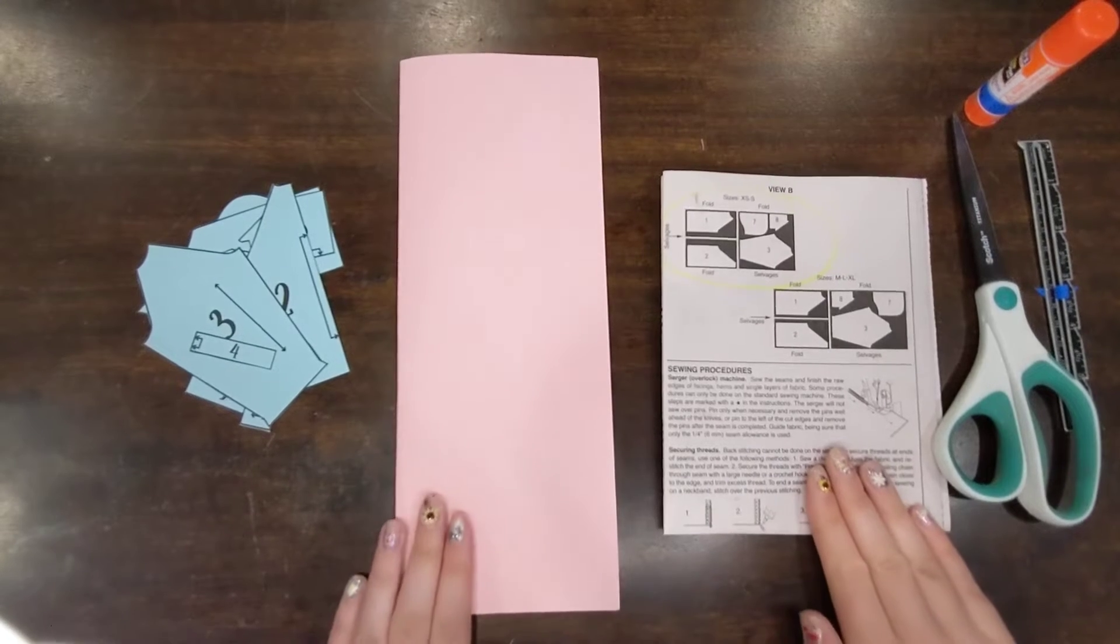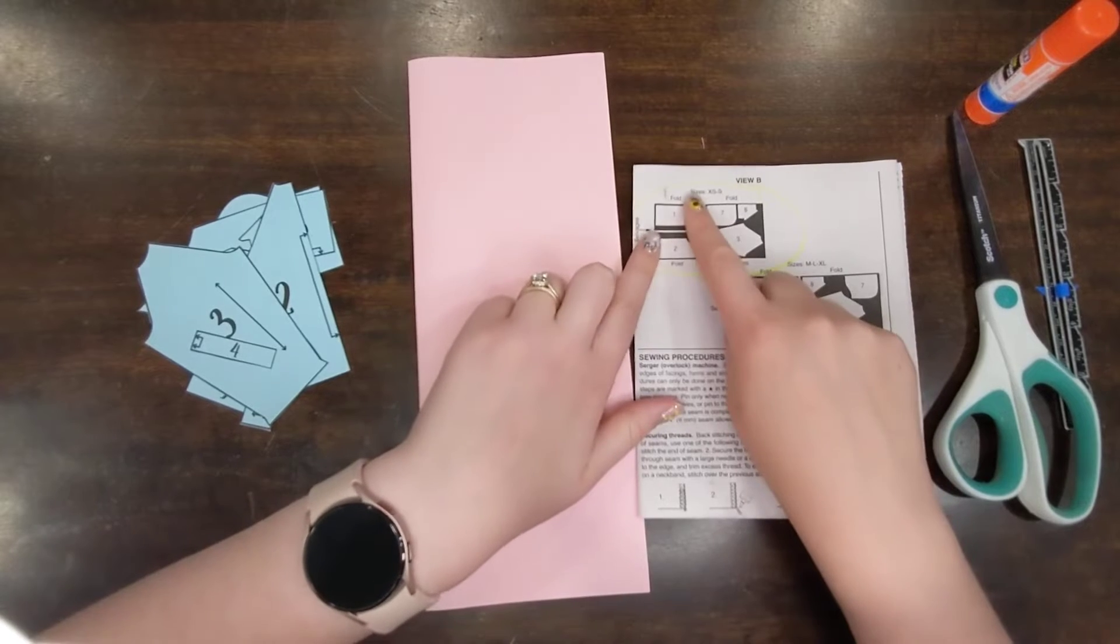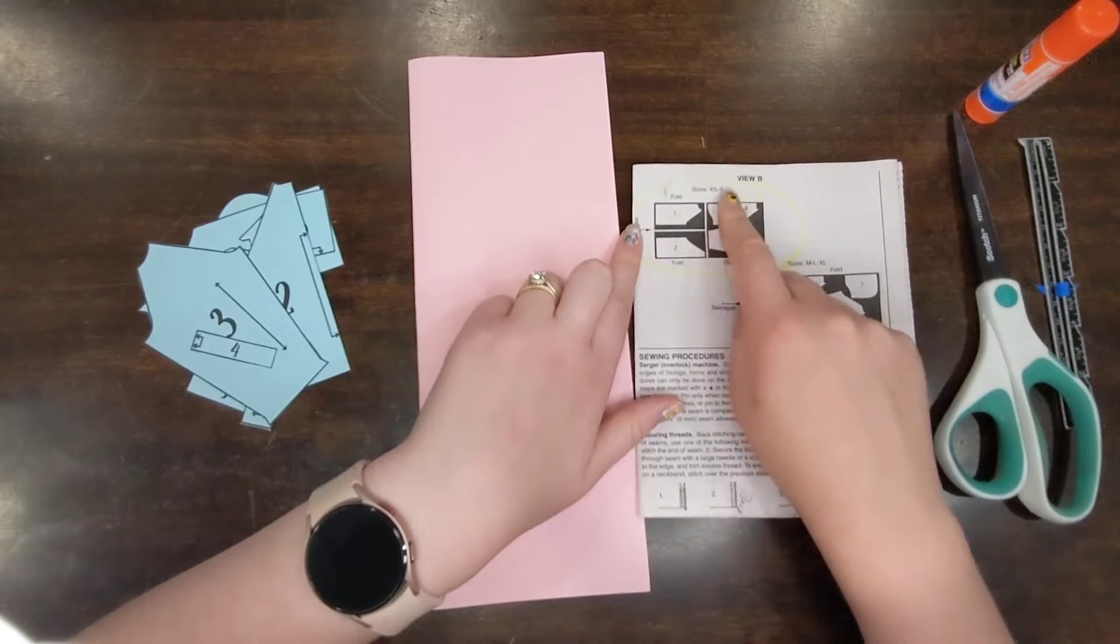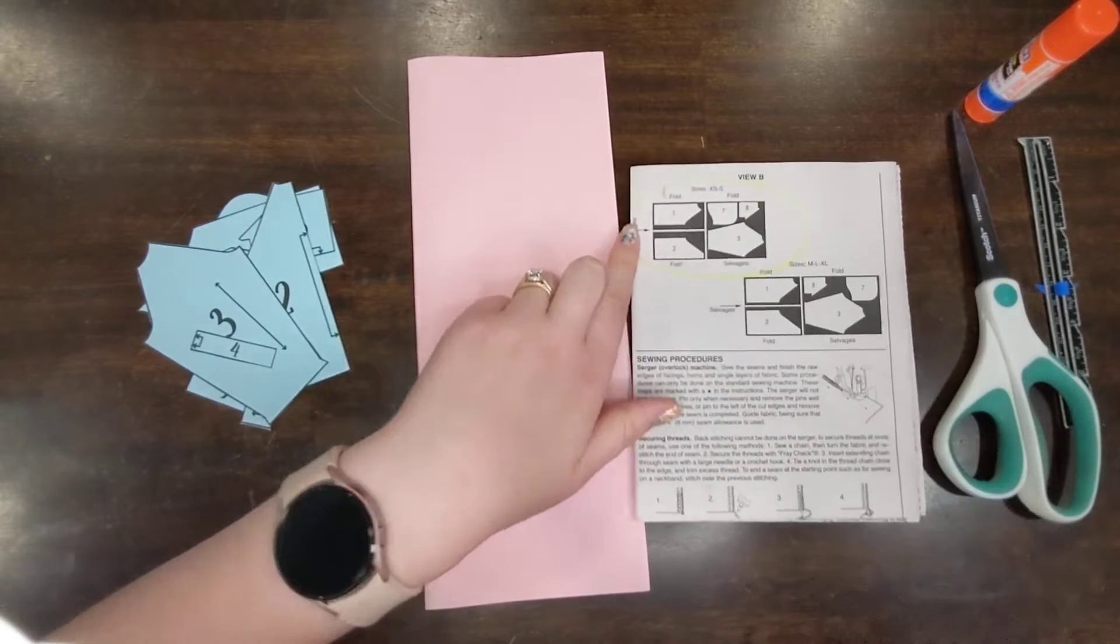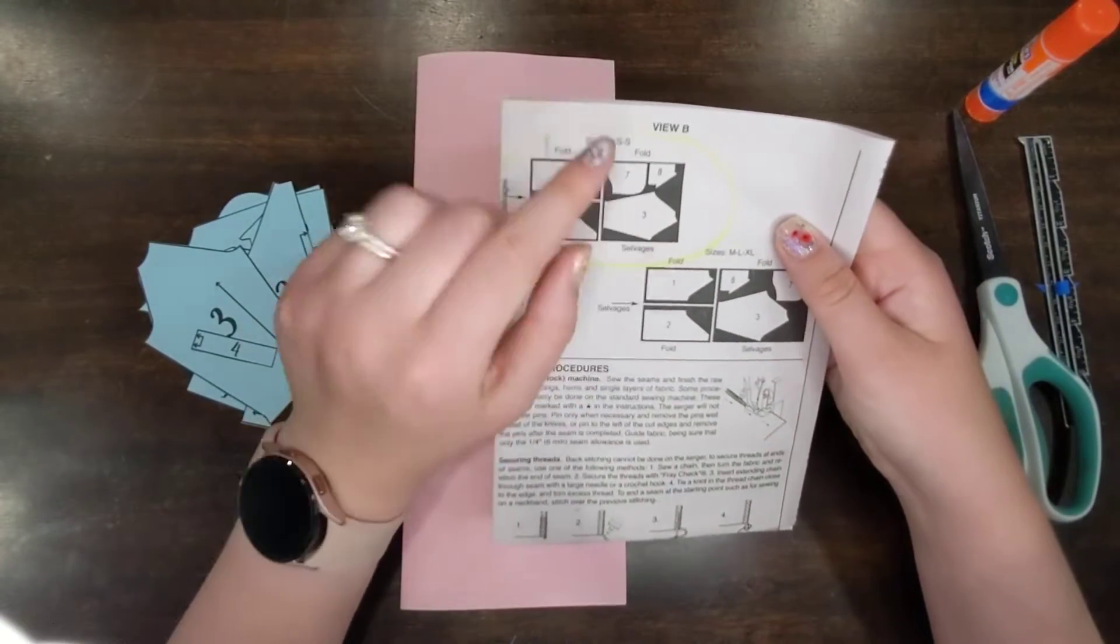After getting all of your materials prepared, you're ready to practice your layout. In this video, we're going to be practicing the extra small to small layout for view B of the hoodie.